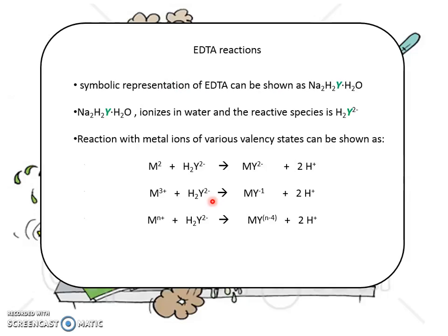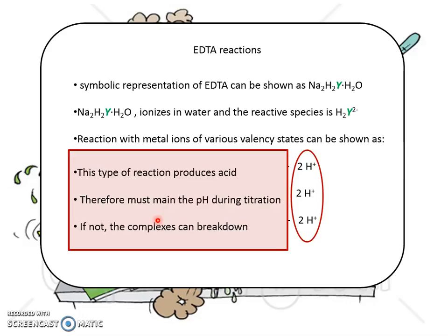This shows the general reaction of EDTA with different valency states of the metal. What is important to highlight is the hydrogen ion that will be produced in the EDTA reactions. This is a concern because when there are H⁺ ions, the pH will decrease during titration. When pH decreases, it will break down the complexes. Therefore, during EDTA reactions, pH must be monitored.